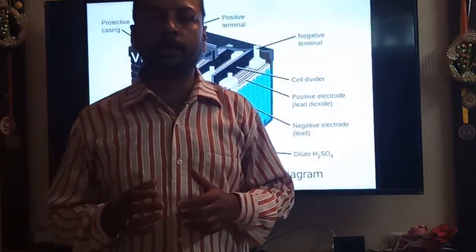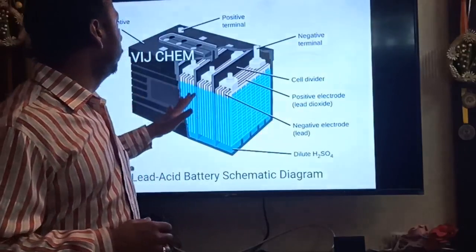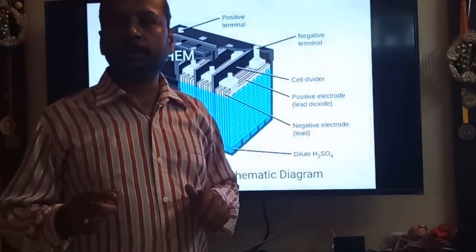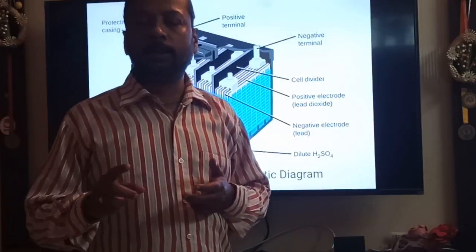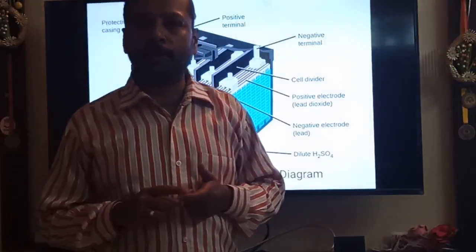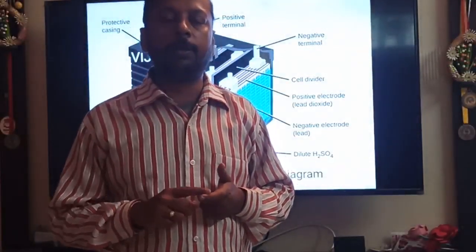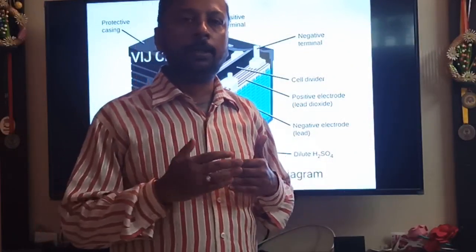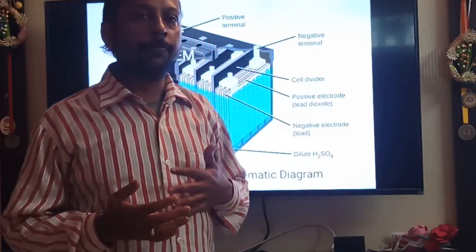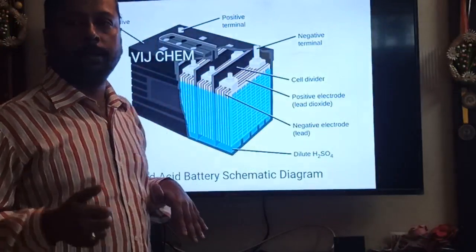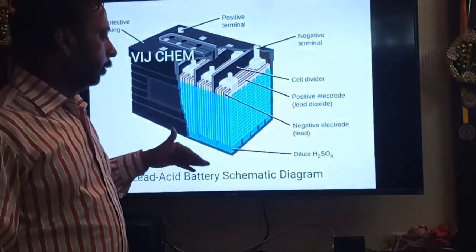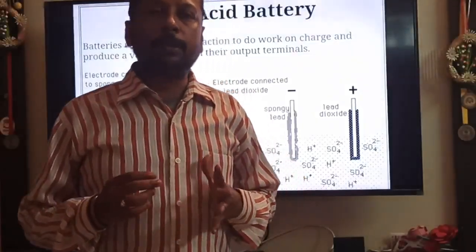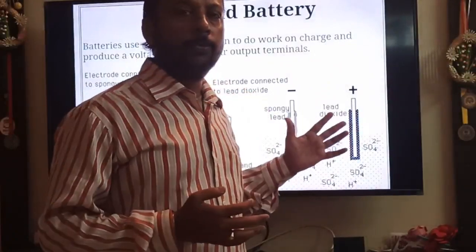So three things to understand: one electrode is made of spongy lead, another electrode is made of lead dioxide or lead peroxide, and the electrolyte is sulfuric acid. All cells are connected together to give better voltage and they are kept in a protective casing. This is the diagram — try to draw it. Now I will explain the chemistry through this slide.